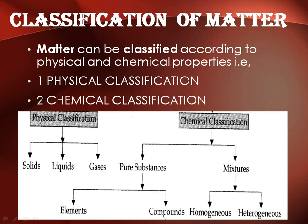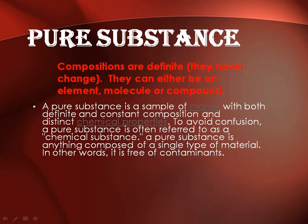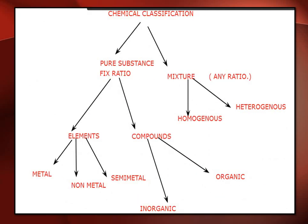Moving on, we have discussed in the last section about physical classification, its types, chemical classification, pure substance, and elements. In this lecture we will discuss compounds and mixtures. A pure substance has a definite composition — compound, element, and molecule are all pure substances which do not contain any impurity.